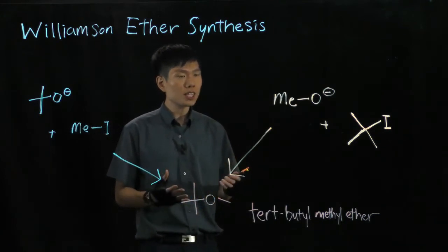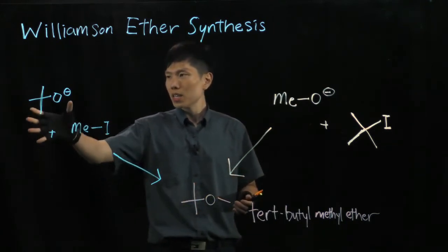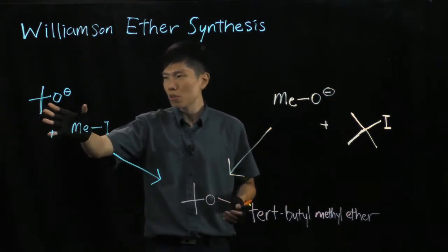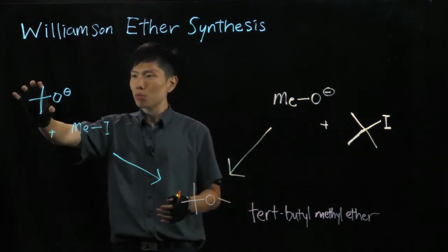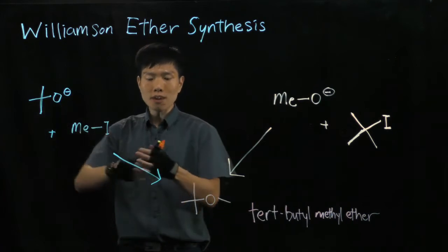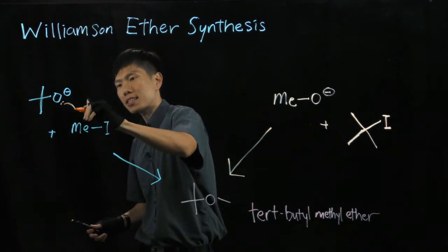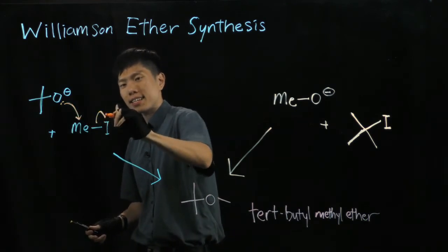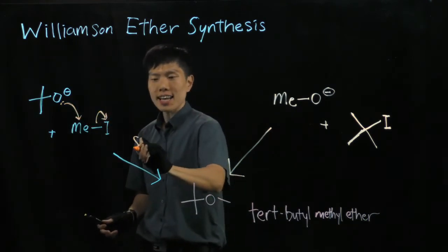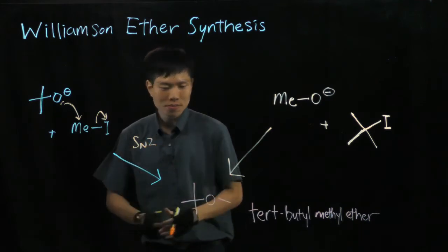Now there could be two approaches here. I've already drawn in the blue approach, we are using a tertiary butoxide, the nucleophile, to attack the methyl iodide, kick it out in an SN2 reaction to form this.